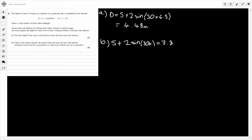Now we need to solve this. So we can take 5 across. So 2 sine 30t is going to be equal to minus 1.2. And then sine of 30t, that's going to be equal to minus 0.6.